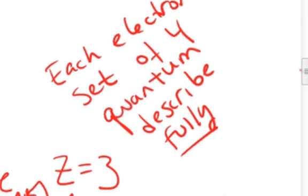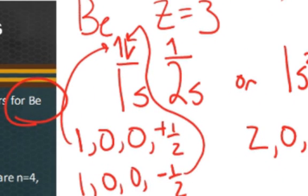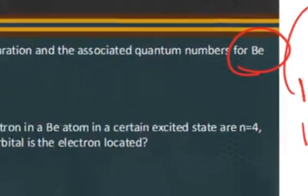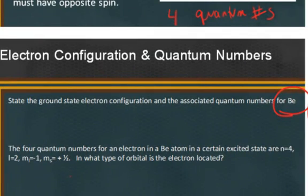And then the next question here, it says, the four quantum numbers for an electron in a beryllium atom in a certain excited state are n=4, l=2, m=1, m_s=+1/2. What type of orbital is this electron located? Alright, so if it's 4, then it's the orbital with energy level 4. L=2, again, when l=0, it's s. When l=1, it's p. When l=2, it's d.